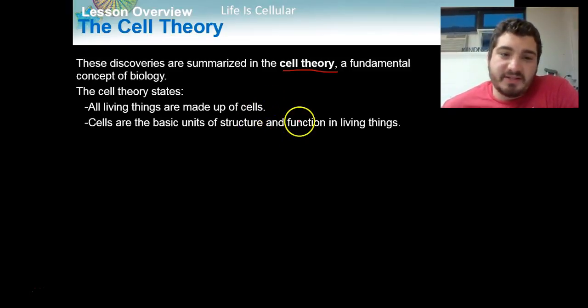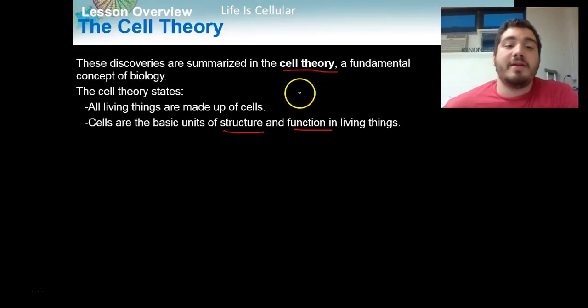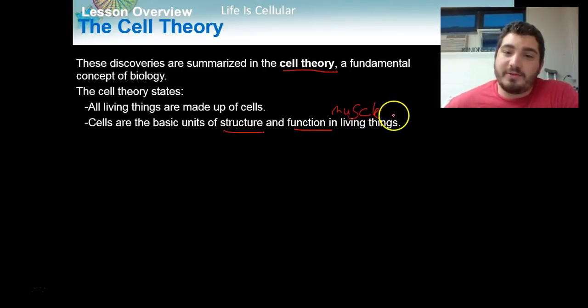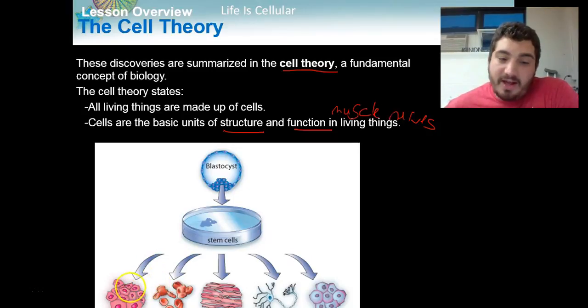The second thing the cell theory states is that cells are the basic units of structure and function in living things. Structure and function are your key terms here. All the different types of things that our bodies do, whether it's creating enzymes or sending nerve impulses or making muscle contractions, there are cells that have specific structure and function to do those things. And we can use that as an example of muscles, nerves, digestion. All those have special types of cells. And the third part of the cell theory. And here we see a picture. We have cells that form all different types. We have pancreatic cells, blood cells, cardiac cells, nerve cells.